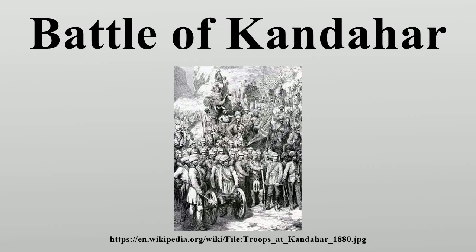Whilst General Macpherson advanced against Gundimullah Sahib Dadd, General Baker moved against Gundogan, with the 72nd Highlanders and the 2nd Sikh infantry in the van. Again the fighting was hard fought, the Afghans holding well-defended positions that only a concerted effort by the attackers could dislodge. The left wing of the 72nd finally took the village, whilst the right wing supported the Sikhs, battling through the orchards between the two villages. As General Baker's brigade moved forward into the open, it came under artillery fire from the extremity of the Pir Pimal Hill and massed attacks from Ghazis, the latter resolutely repelled by the Highlanders and Sikhs. The two brigades could now together move forward.